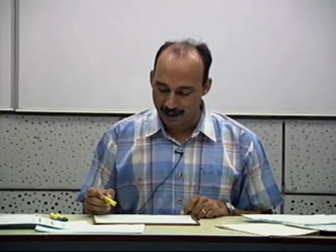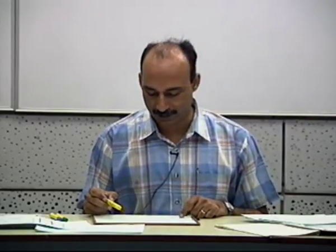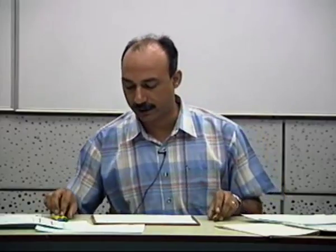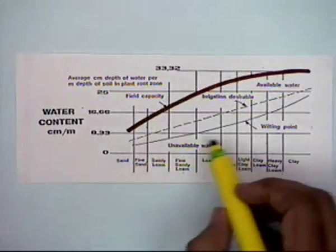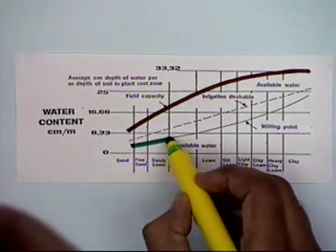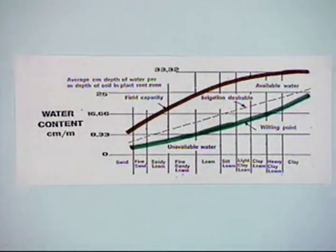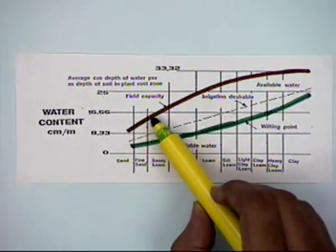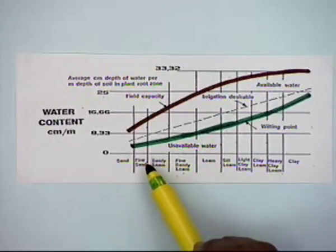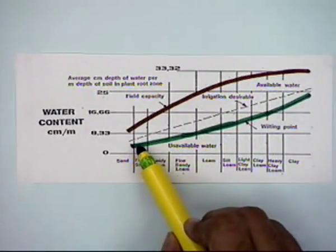But does that mean clay soils are more useful for crop production? Not necessarily. If you plot the wilting point and look at how it varies from one soil to another, you will find it has a similar increasing trend as the field capacity. In the case of fine soils, though the moisture available at field capacity is very high, the wilting point also occurs at a very high moisture level.